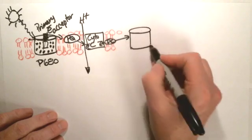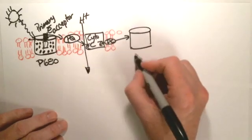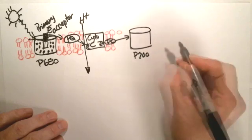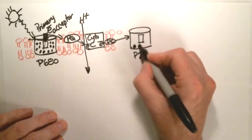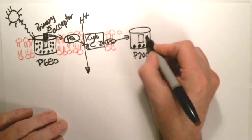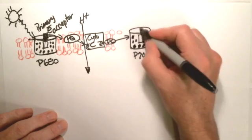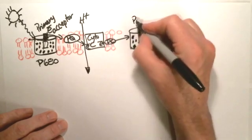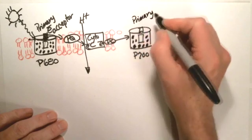And the plastoquinone will then take this electron. It'll move through the membrane to another photosystem, photosystem I, called P700. P700 then will pick up that electron, and it will send that electron to the primary electron acceptor for that particular photosystem.